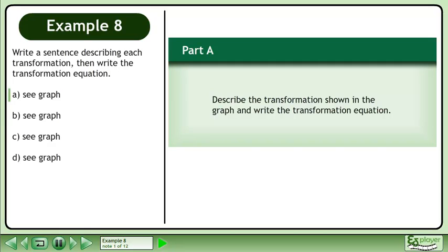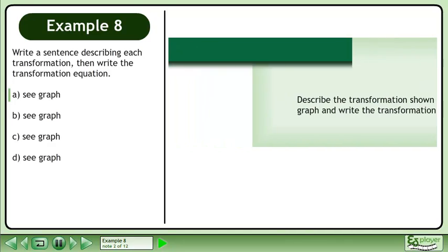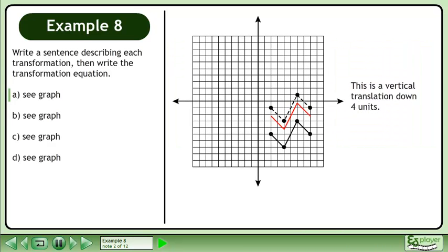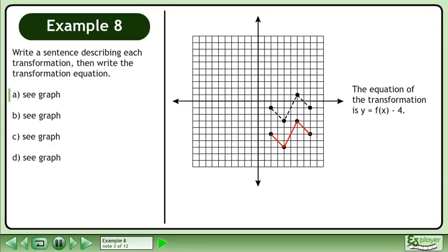In Part A, we'll describe the transformation shown in the graph and write the transformation equation. This is a vertical translation down 4 units. The equation of the transformation is y equals f.